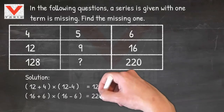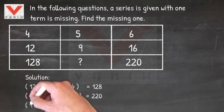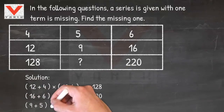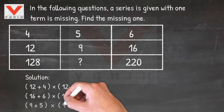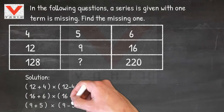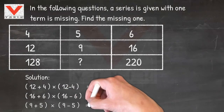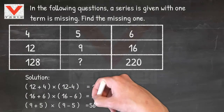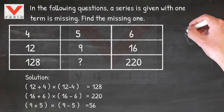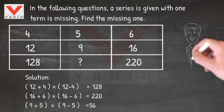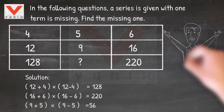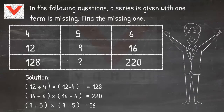In the second column, follow the same pattern: 9 plus 5 times 9 minus 5 equals 14 times 4 equals 56, which is the answer.